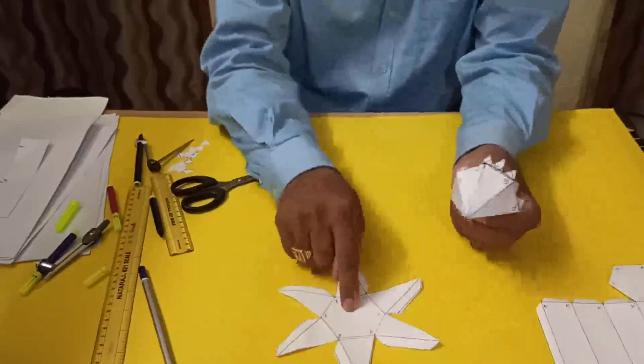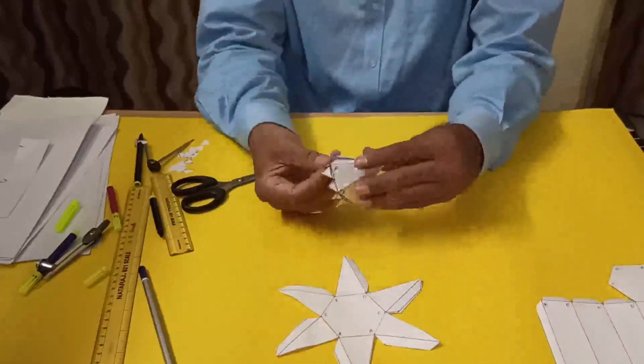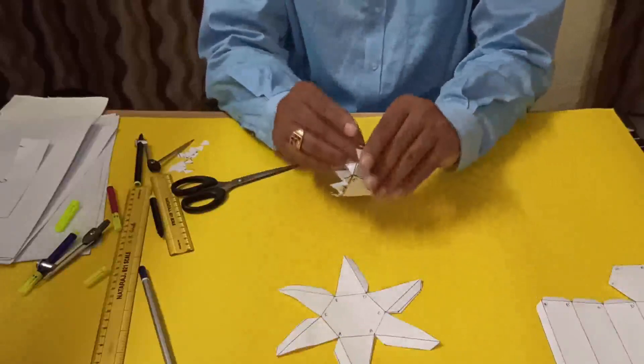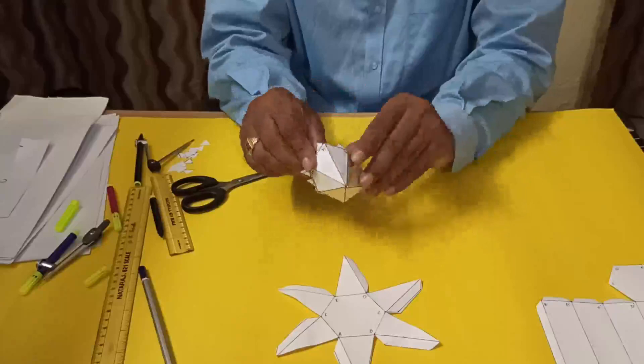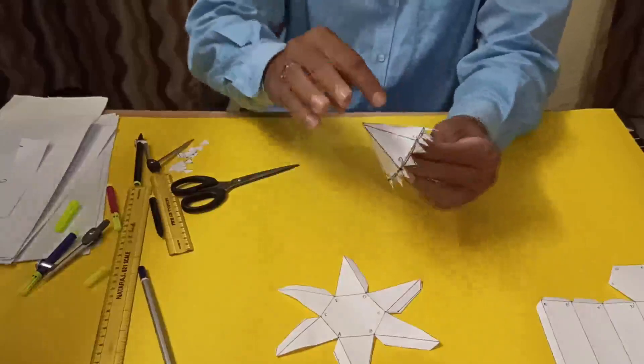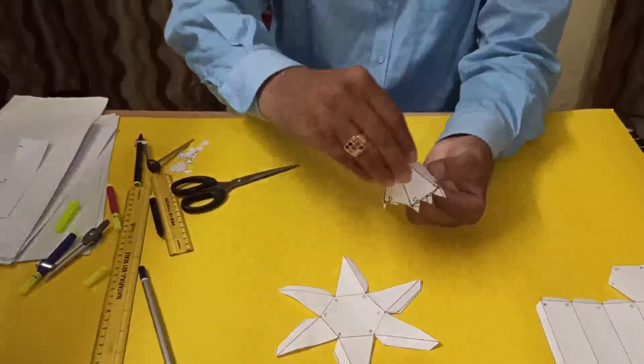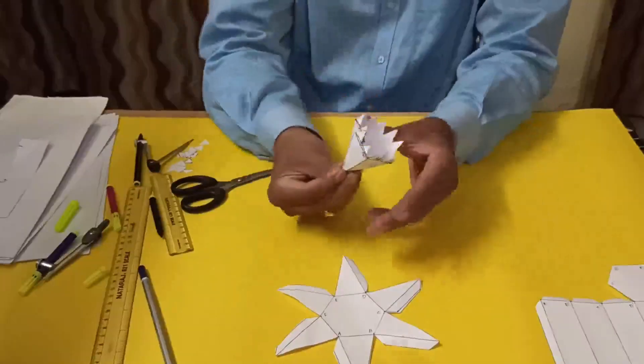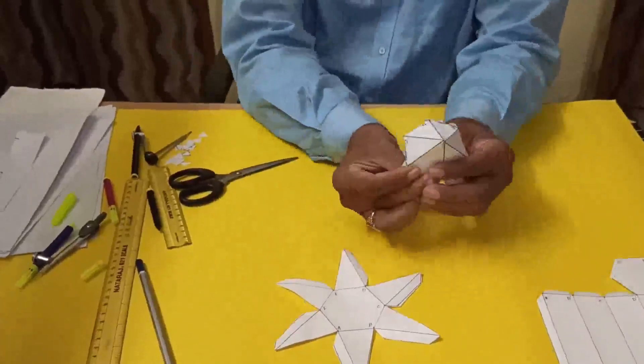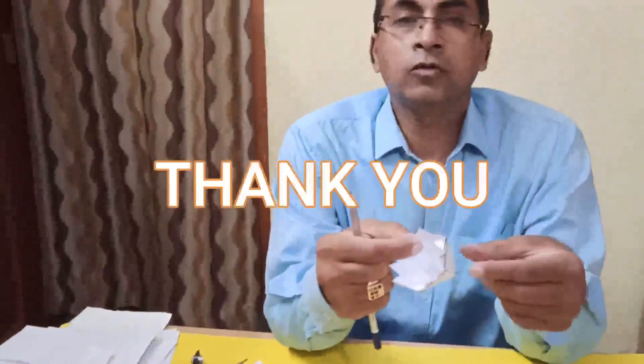This one has a base, but this one is without a base. This way you can fix it with the cylinder. One, two, three, four, five, six - six bits are there as the border, and it will fix with this one. Thank you.